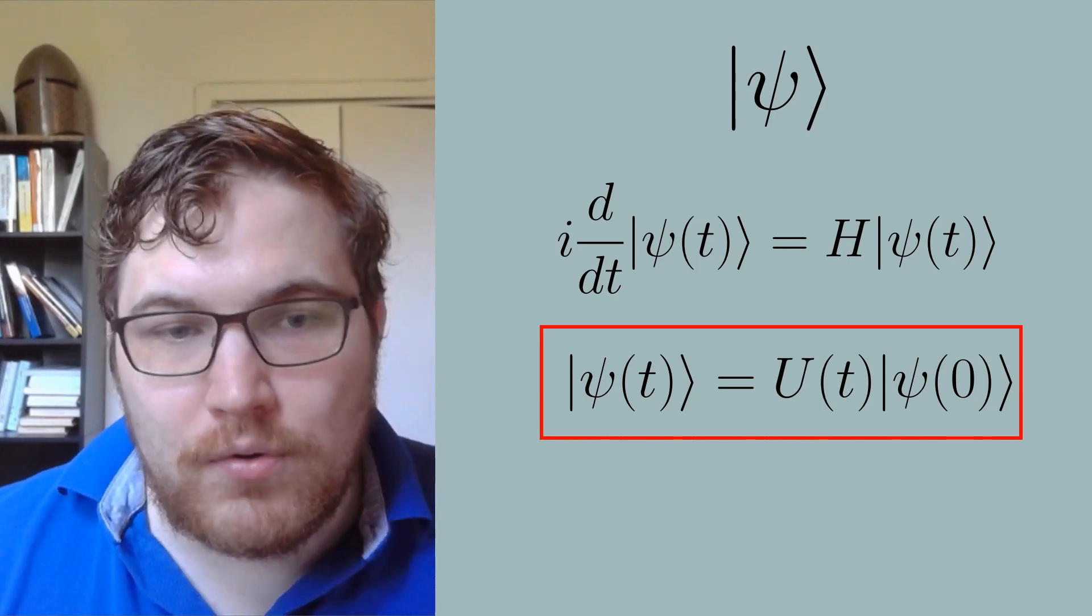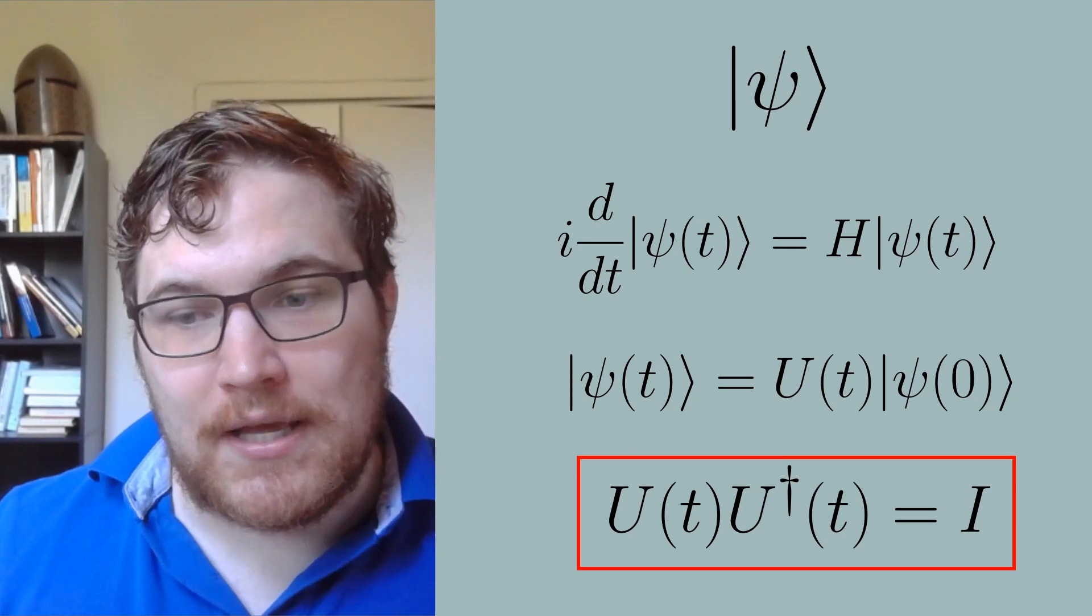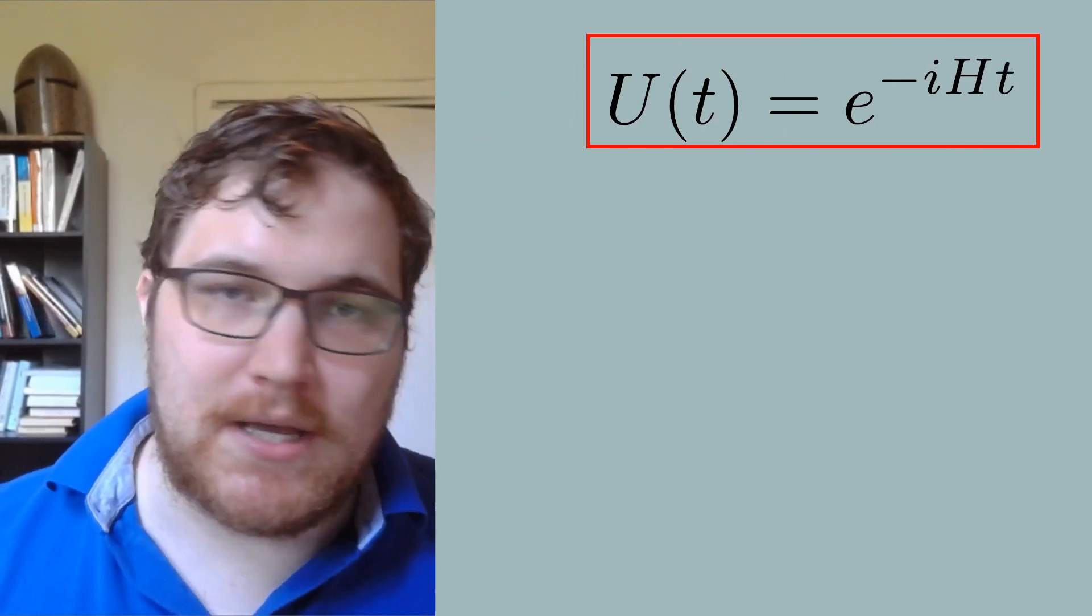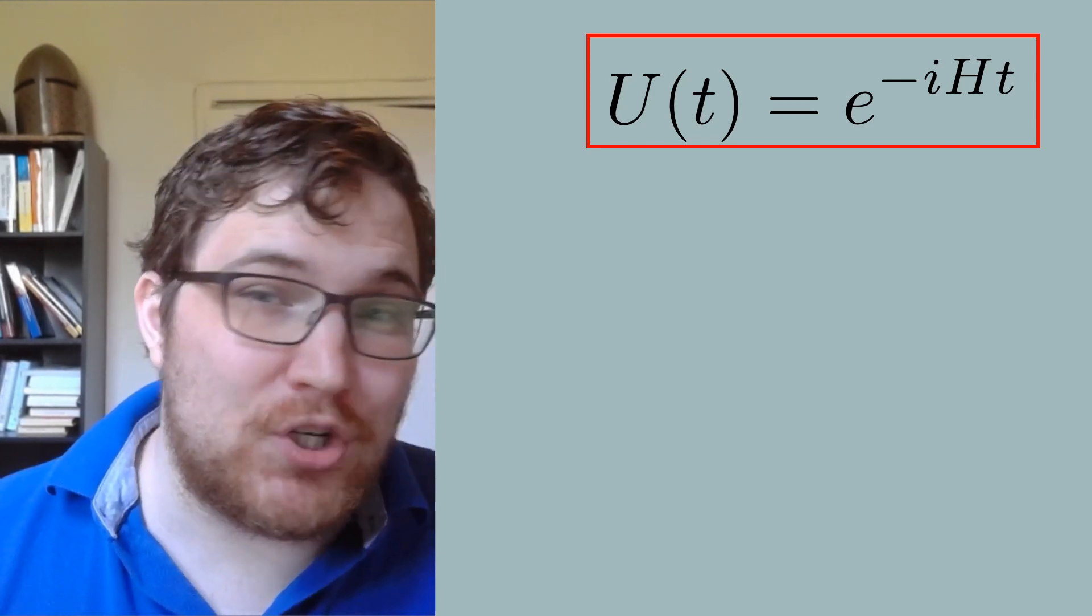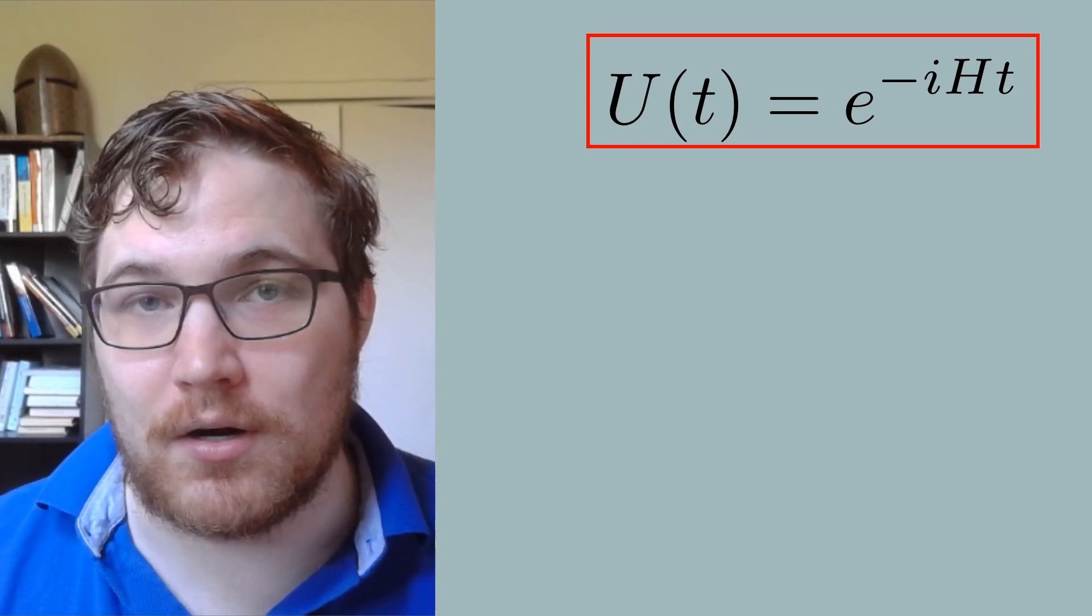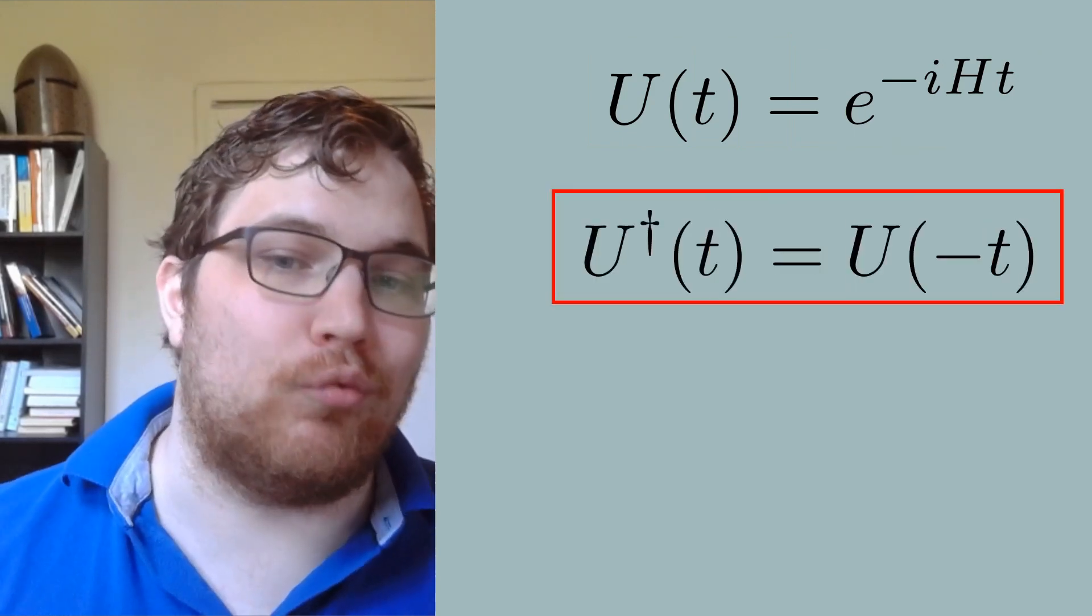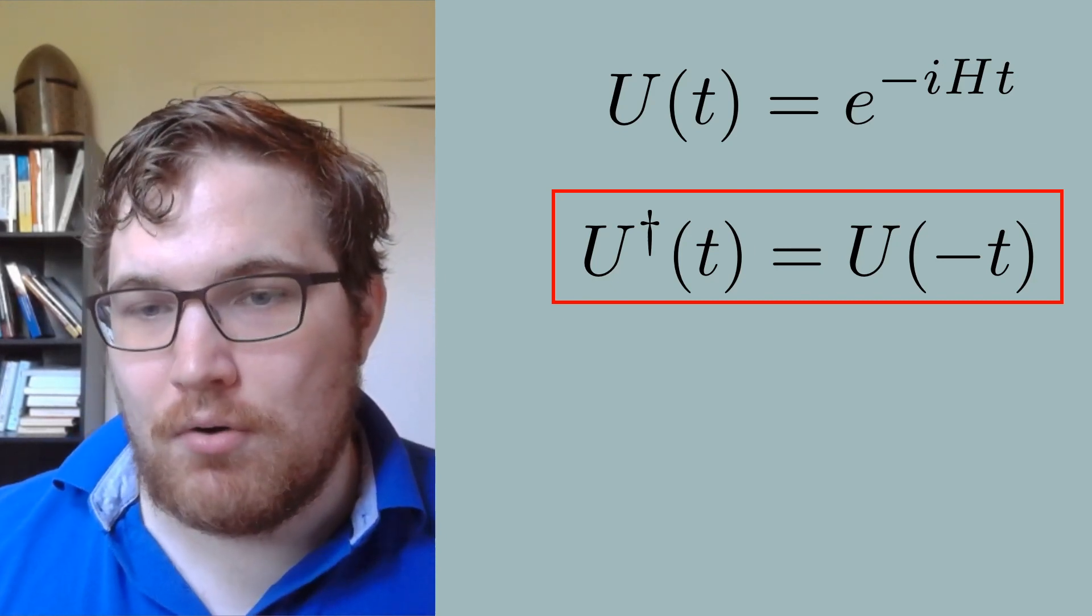Where U is a unitary matrix, meaning that its Hermitian conjugate is its inverse matrix. We know the explicit form of the unitary time evolution matrix and can write it down as the following equation, where we have taken our initial conditions to be at t equals zero.